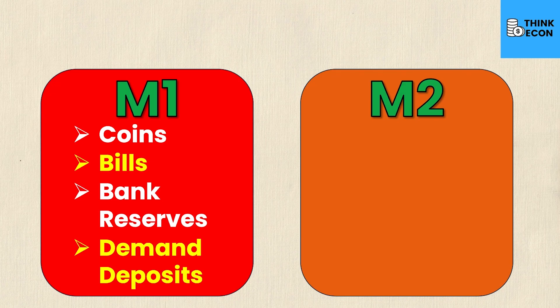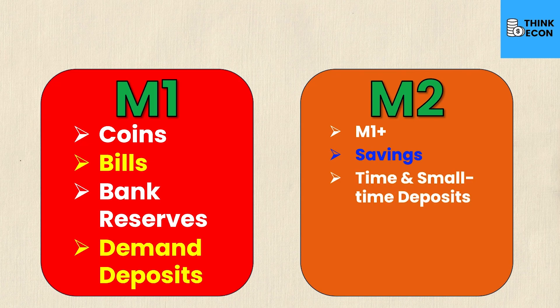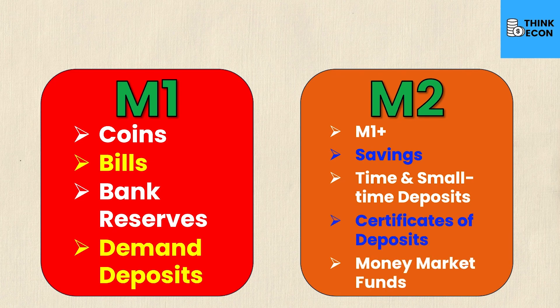M2 on the other hand is slightly less liquid. It includes all of M1 plus your savings account, which isn't as liquid as your checking account, plus time and small time deposits — accounts that are locked for a specific amount of time where you can't access the money until that time frame is up, and you typically receive some interest on top of your principal. Anything under $100,000 is typically considered a small time deposit. We also have certificates of deposit — think of these as GICs — and then money market funds.